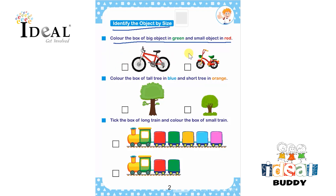The child will first identify both the pictures given over here and then color the box of the big object in green. They can use pencil colors or crayons to do this, and the box of the small object in red.